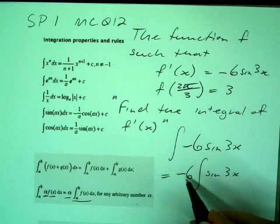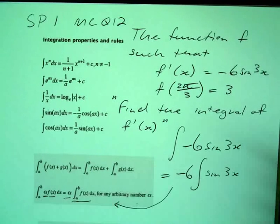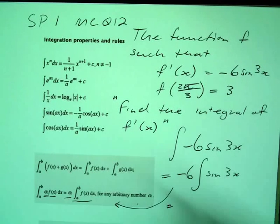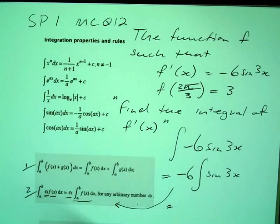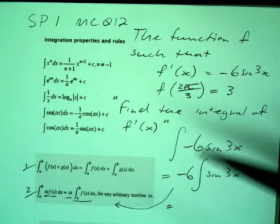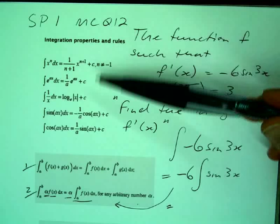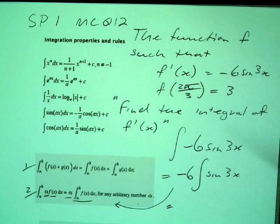So now we've used this rule here, we've used that property. So property 2, I'll label them like that. So property 2 we've used. Can anybody see which integration rule we're going to use now to actually do this part?